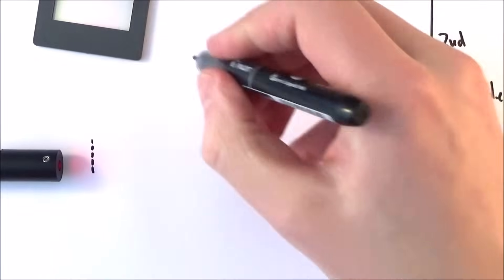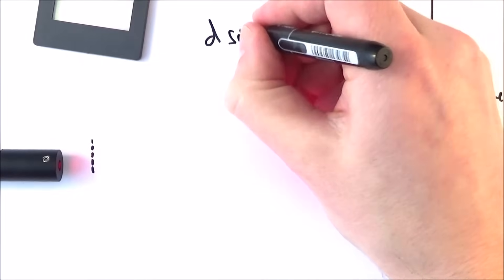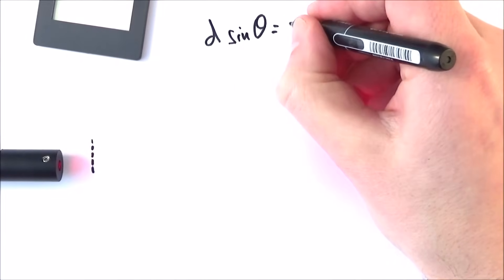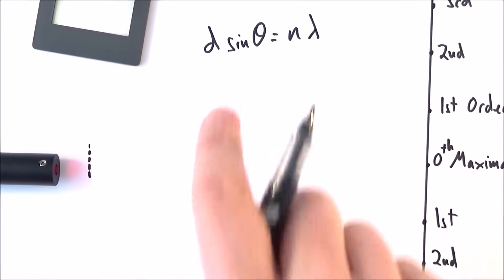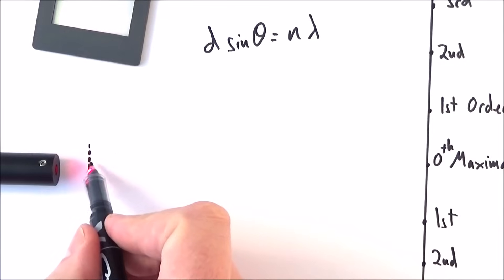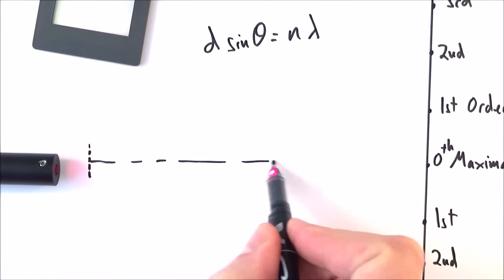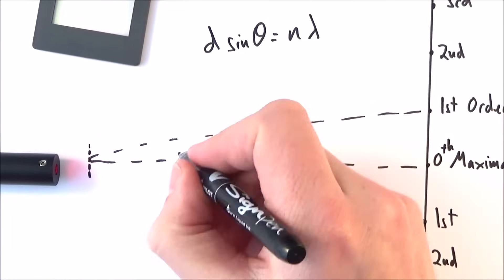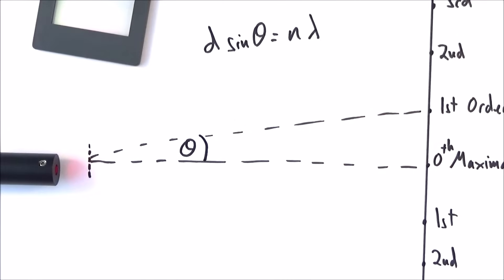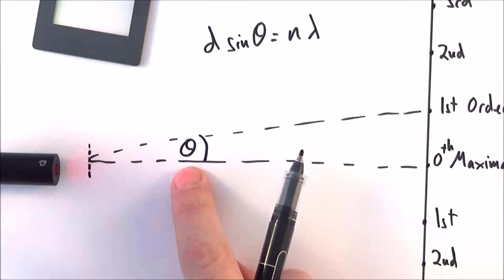What we say is that d sin θ equals n λ. I'd like to talk through this equation now. If we think about a line that joins the center of the diffraction grating to the zeroth order and also a line that goes to the first order, the angle between the two is equal to theta. We can measure this very well in the lab.